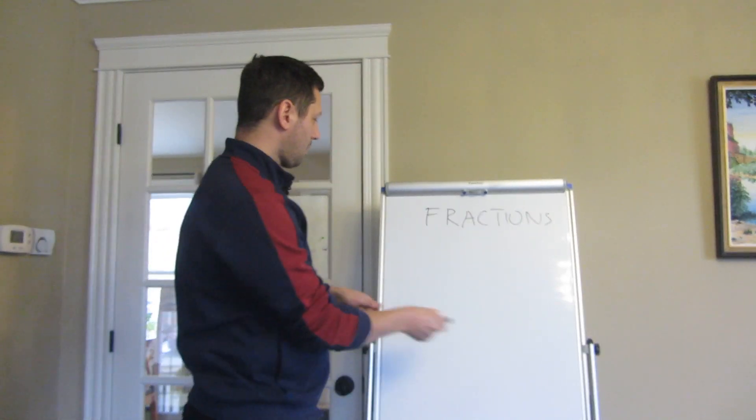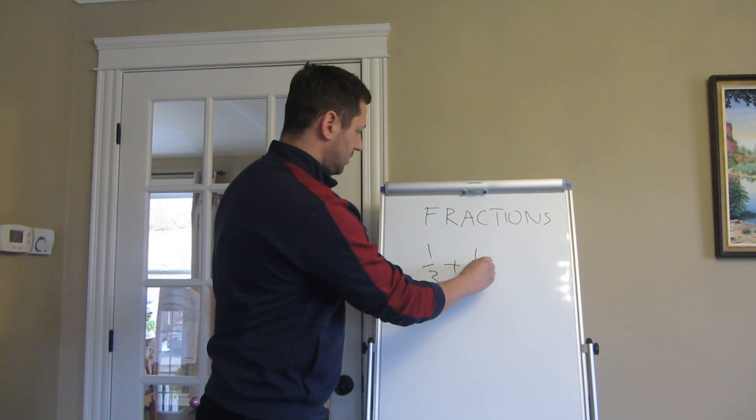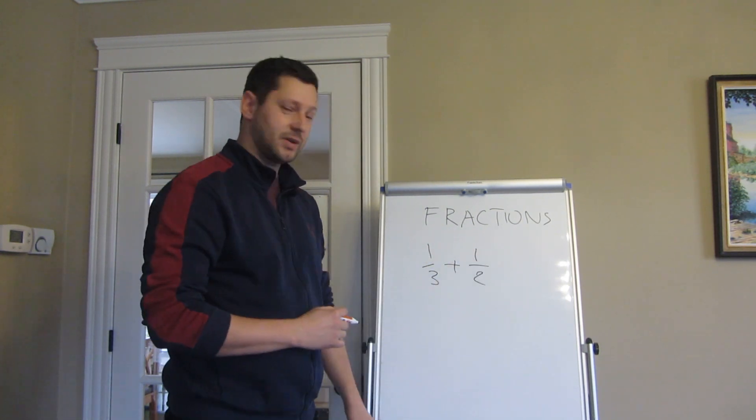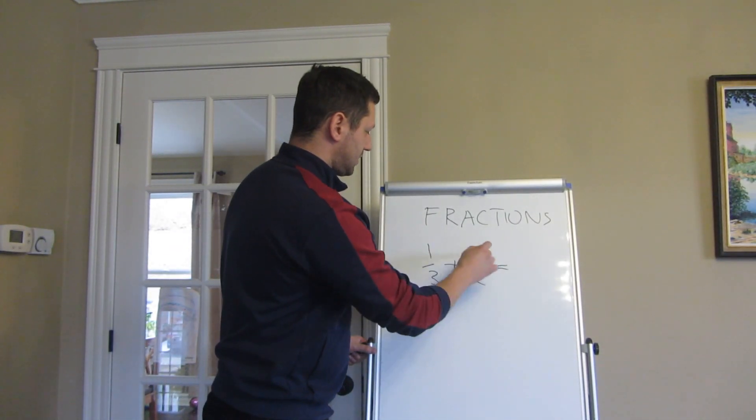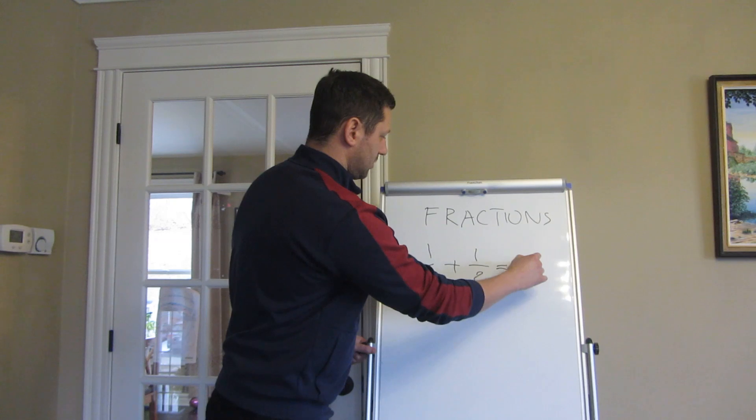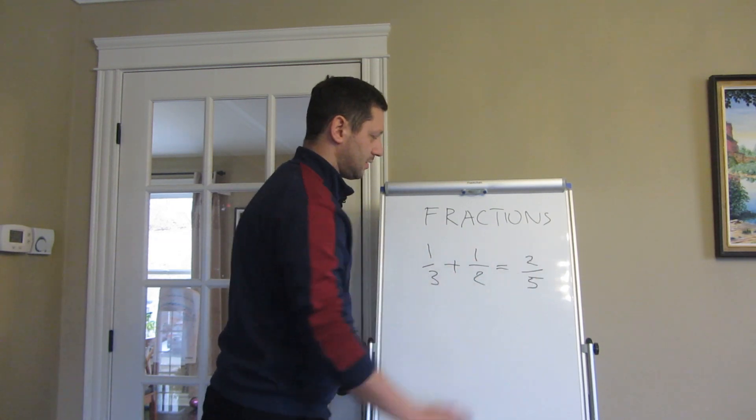For example, let's take one third and we need to add to it half. So apparently some of the students arrive at these solutions: they sum the denominators, so it will be two, and then numerators, and then they've got five.